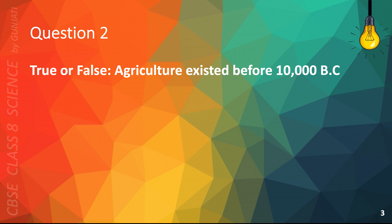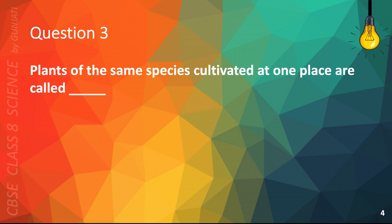Question 2. True or false: agriculture existed before 10,000 B.C.? The correct answer is B. False.